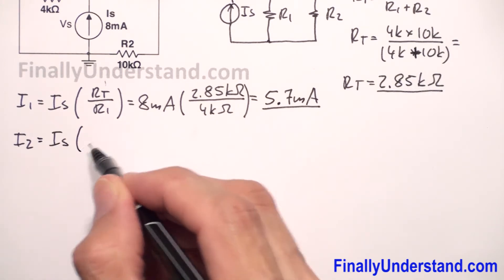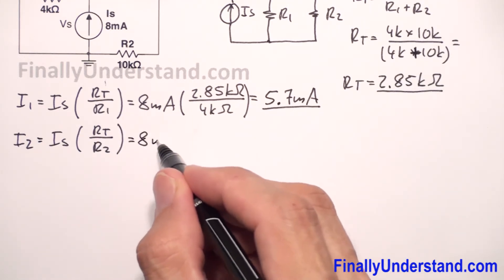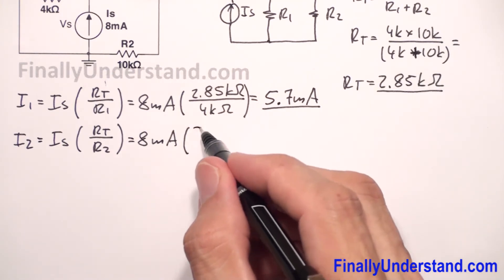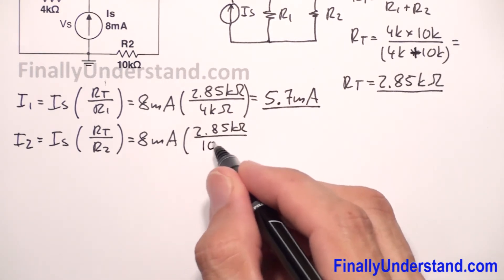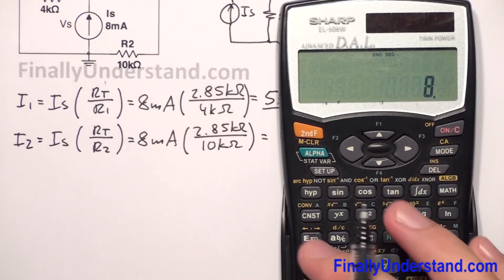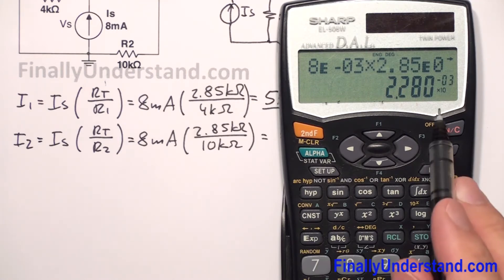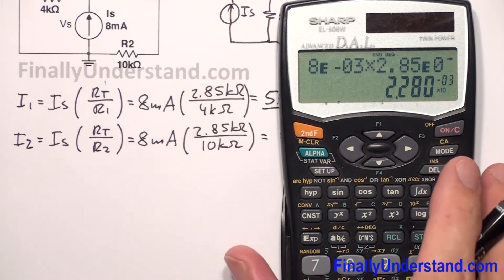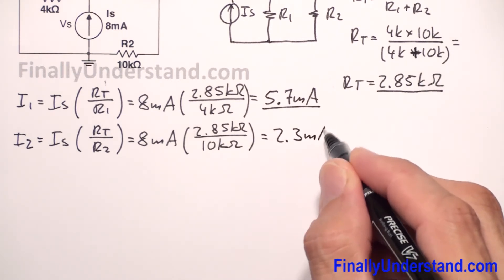So I have I_source times R_total over R2. This is equal to 8 mA times R_total, which is 2.85 kΩ, over R2, which is 10 kΩ. I have 8×10⁻³ times 2.85×10³ divided by 10×10³. This is equal to 2.28 mA, approximately 2.3 mA.